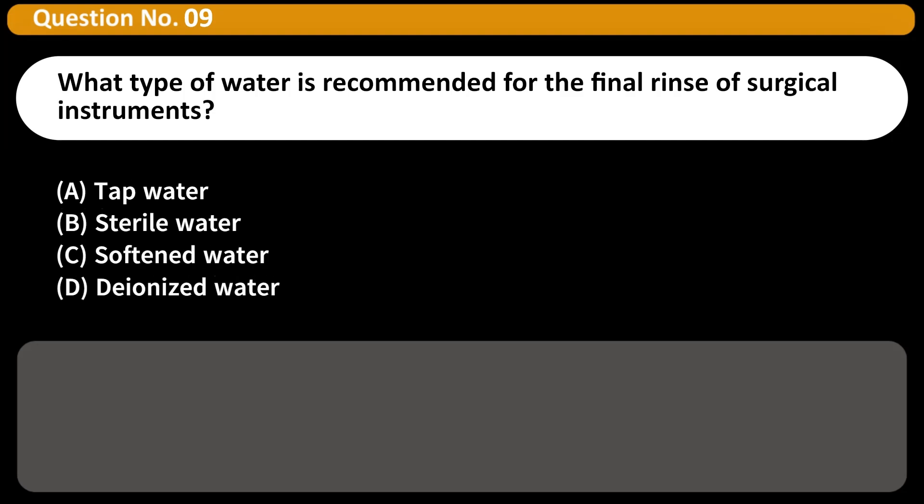What type of water is recommended for the final rinse of surgical instruments? A. Tap water, B. Sterile water, C. Softened water, D. Deionized water. Answer D. Deionized water helps prevent mineral deposits and spotting on instruments.